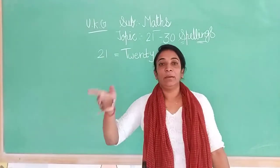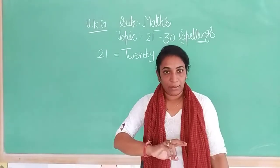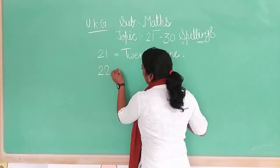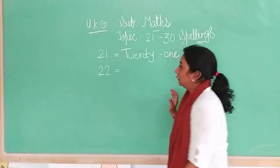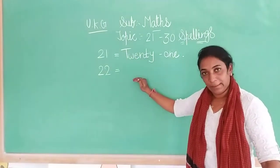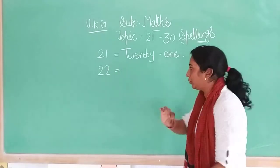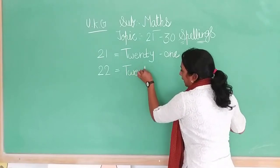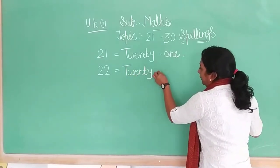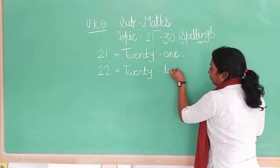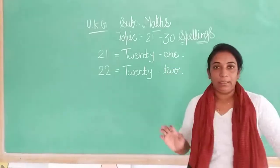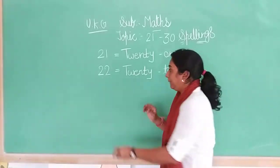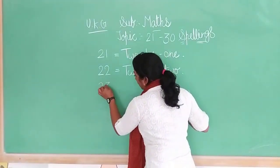21, then after 2 comes 22. 2, 2 — 22. First we write spelling of 20 and then write spelling of 2. Twenty: T, W, E, N, T, Y. Then two. After 22 comes 23: 20 then 3.